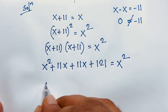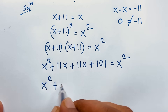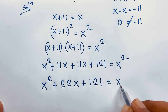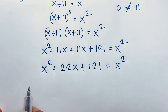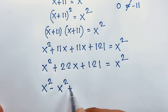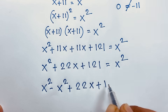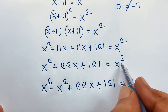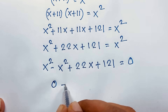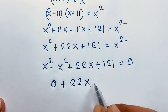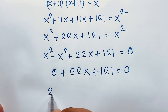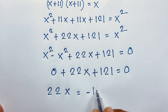Now it will be x square plus 11x plus 11x, which is 22x, plus 121 is equal to x square. Now I just move this x square to this side, it will be negative x square. So x square minus x square plus 22x plus 121 is equal to 0. x square minus x square will be 0, so it will be 22x plus 121 is equal to 0. This equation gives 22x is equal to minus 121.